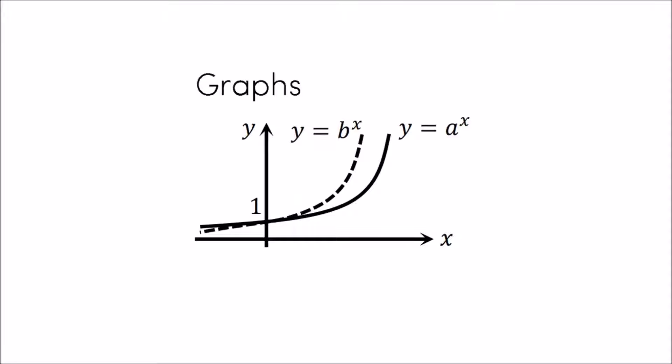For negative x values you would get 2 to the power of minus 1, 2 to the power of minus 2, 2 to the power of minus 3 which makes half, quarter, one eighth. These numbers are getting smaller but they never reach 0.